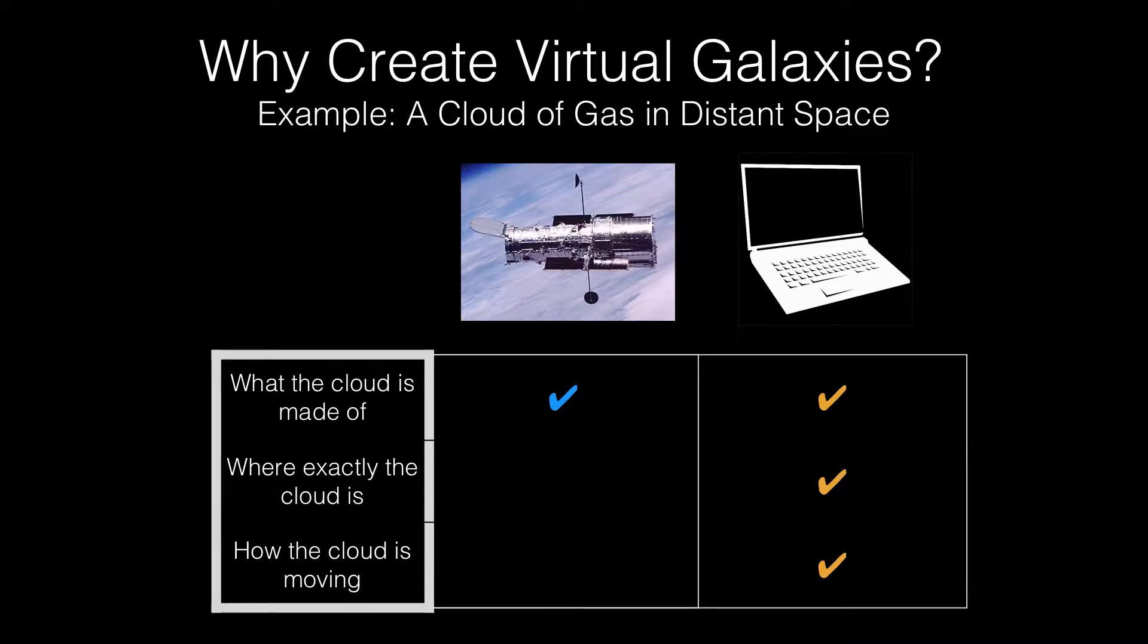Let's motivate that though. Why would you want to? Imagine a cloud of gas floating in distant space. With the best telescopes available, you might be able to figure out how much this gas is made of hydrogen and helium—what it's made of. But you don't know exactly where it is or how fast it's moving. That's much more difficult. However, if you create this cloud of gas yourself as part of a virtual galaxy, you know all of this information.